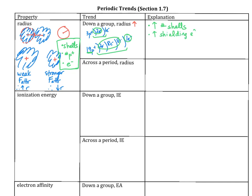As the shielding effect increases going down a group, that sets up a weaker force of attraction between the nucleus and the electron cloud, and we have the weaker force of attraction leading to a larger radius. So the radius increases going down a group due to more shells increasing the shielding effect.